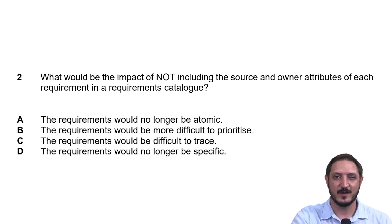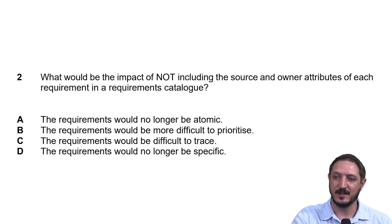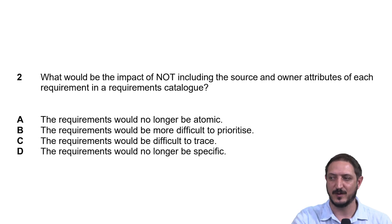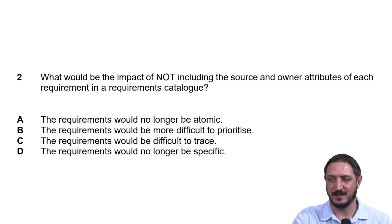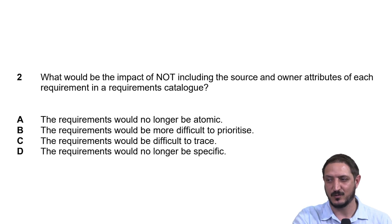Welcome back. This is the next question in this requirements engineering sample paper walkthrough. The question asks: what would be the impact of not including the source and owner attributes of each requirement in a requirements catalog? So we need to think about what would happen in this situation if we are not including a source and owner.